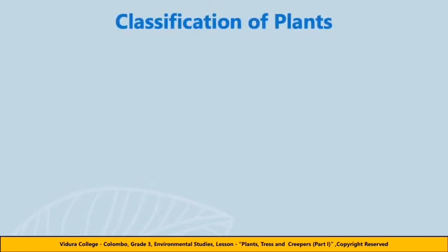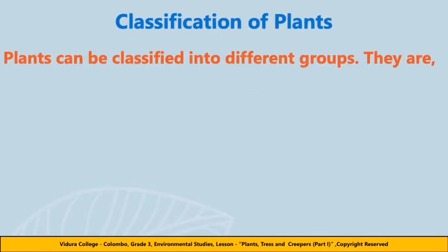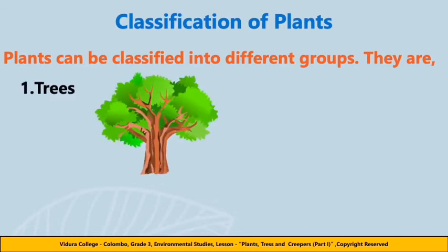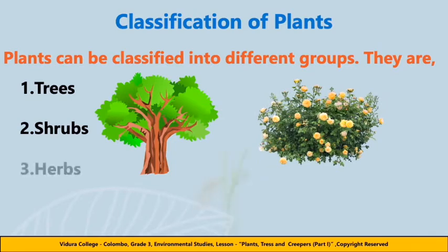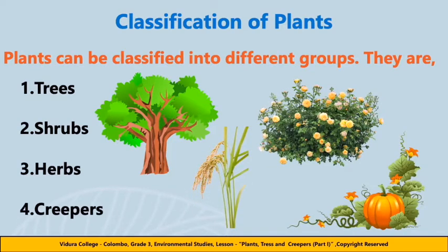Classification of Plants: We can classify plants into a few different groups. They are trees, shrubs, herbs and creepers.